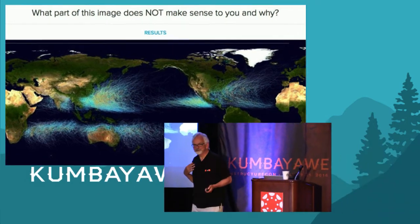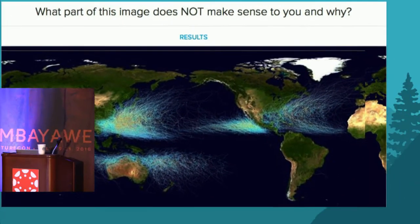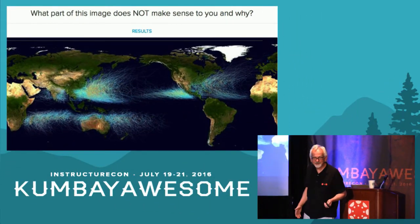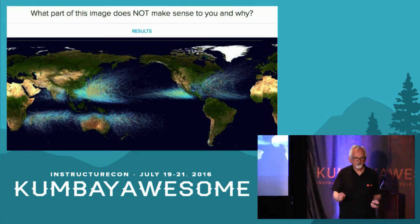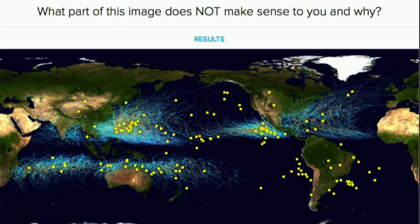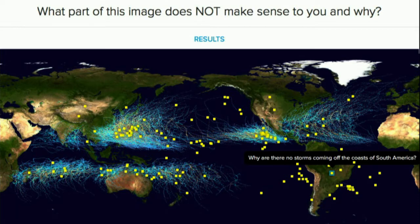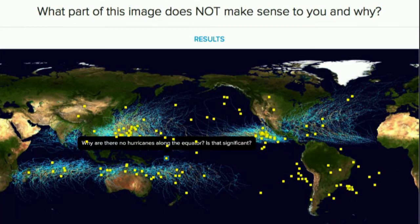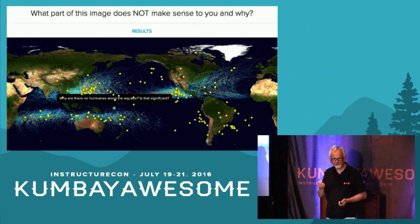I love imagery, being a meteorologist. Here's a map of all the hurricanes, typhoons, and cyclones in the last 50 years, and I ask students: what part of this picture does not make sense to you and why? Students vote by placing dots, and I can click on any dot to see why they chose it. Why are there no storms coming off the coast of South America? Why are there no hurricanes around the equator? This changes the class dynamic — students are actually asking the questions and I'm guiding them through that. Their inquiry leads to discussion in class.